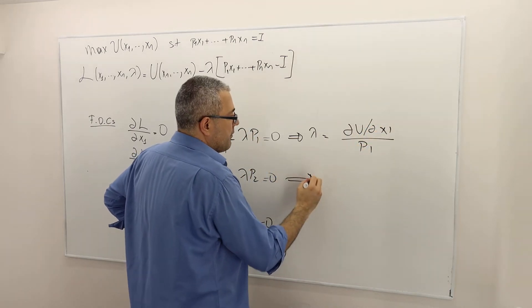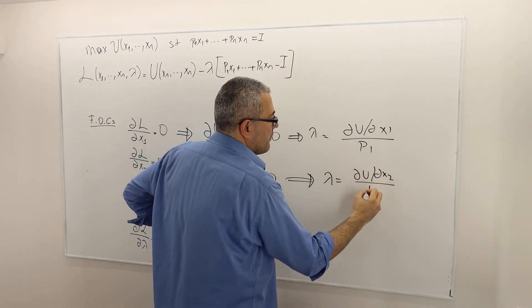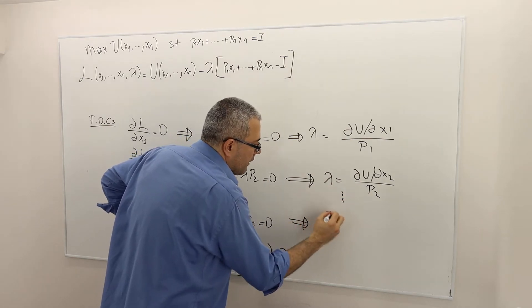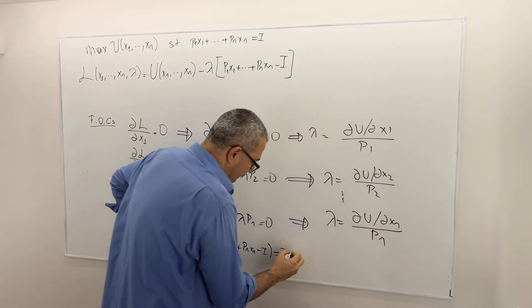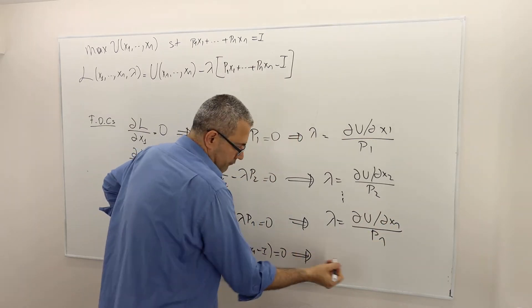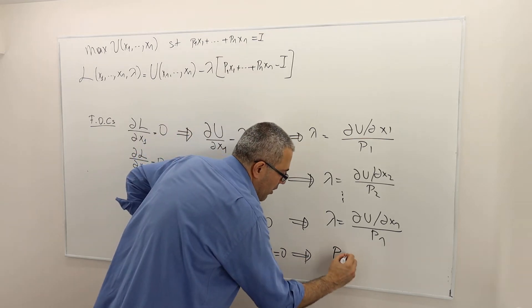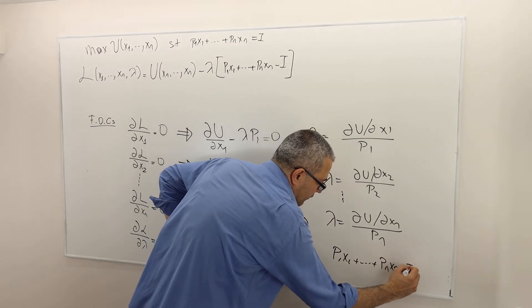And here it means lambda equals del u del x2 divided by p2 and all the way to lambda equals del u del xn divided by pn. And finally here, I have the budget constraint. So that means p1 x1 plus all the way pn xn is equal to income.